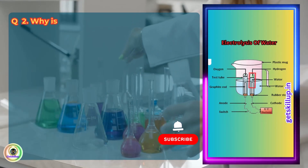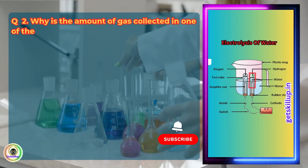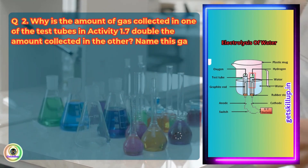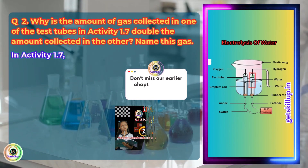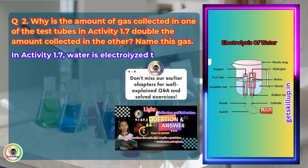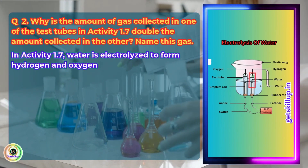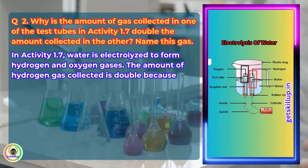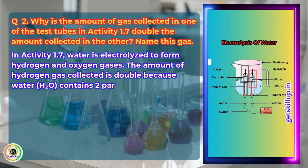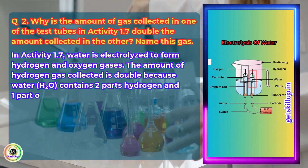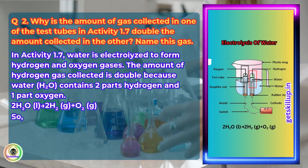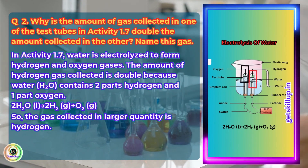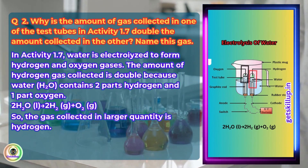Question 2. Why is the amount of gas collected in one of the test tubes in Activity 1.7 double the amount collected in the other? Name this gas. In Activity 1.7, water is electrolyzed to form hydrogen and oxygen gases. The amount of hydrogen gas collected is double because water contains two parts hydrogen and one part oxygen. Reaction: 2H2O (liquid) → 2H2 (gas) + O2 (gas). The gas collected in large quantity is hydrogen.